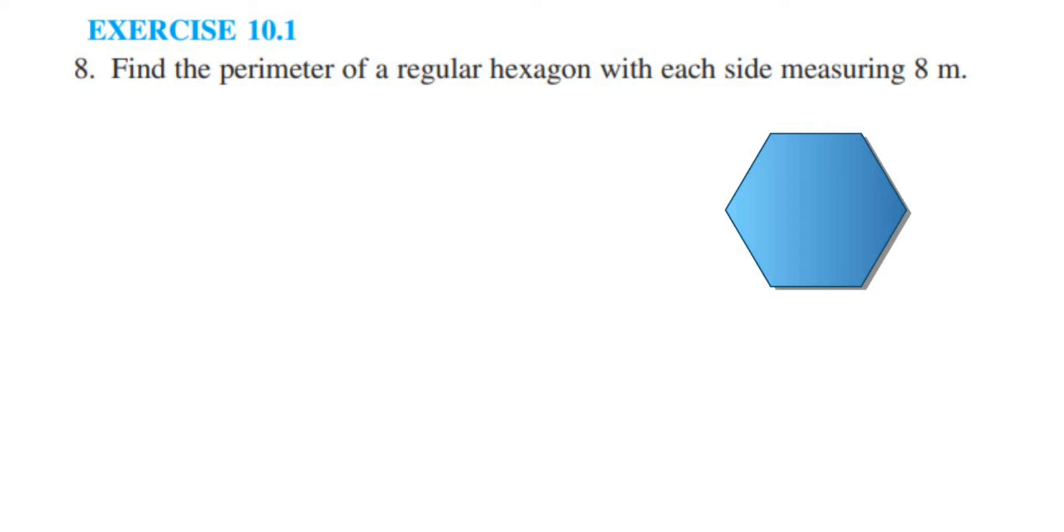Hey everyone, here is a question on exercise 10.1, 8th question. This is from mensuration chapter of class 6. The question is, find the perimeter of a regular hexagon with each side measuring 8 meter.